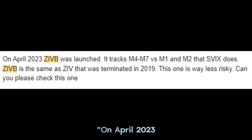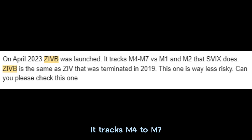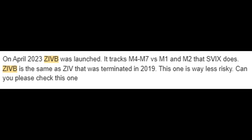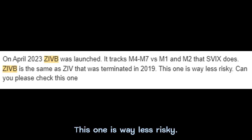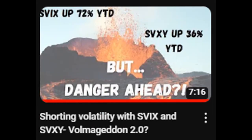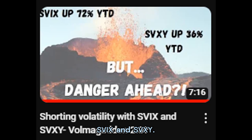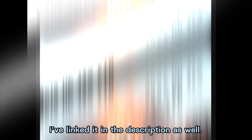The comment stated: in April 2023, ZIVB was launched. It tracks M4 to M7 versus M1 and M2 that SVIX does. ZIVB is the same as ZIV that was terminated in 2019, and this one is way less risky. This was a comment on my video about ETFs SVIX and SVXY, also linked in the description.